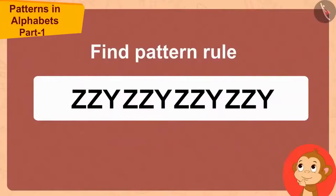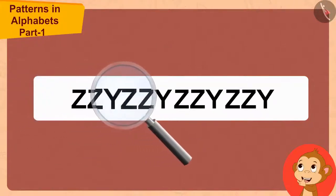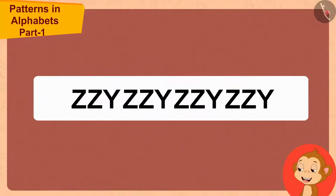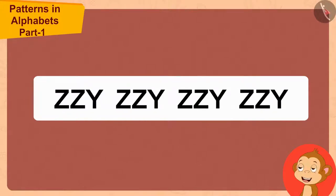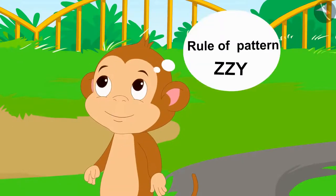Let us see whether Babban was able to recognize the rule of this pattern. Hmm. First, I try to find some sort of repetition in it. Good. Good. Here, Zzy is repeating in these three letter group over and over again. Oh wow, I found the rule of this pattern.